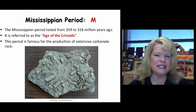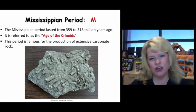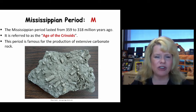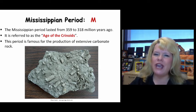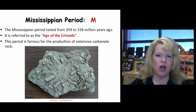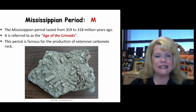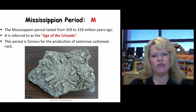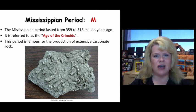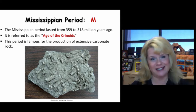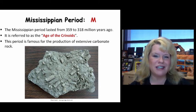The Mississippian period extends from 359 million years ago to 318 million years ago. We have extensive carbonate rocks, especially up from the Mississippi basin area and throughout sections of even the West United States. Arizona has the same types of rocks captured in the Grand Canyon, which we'll be looking at.